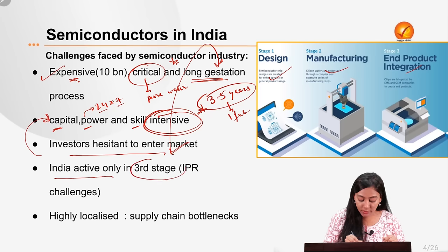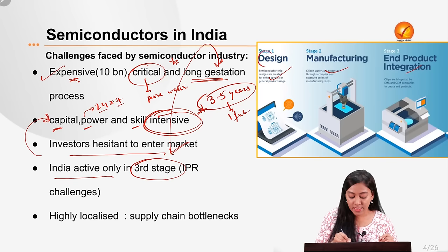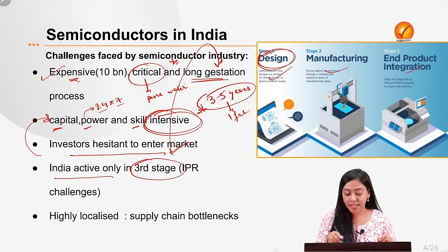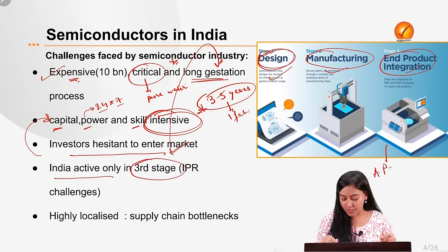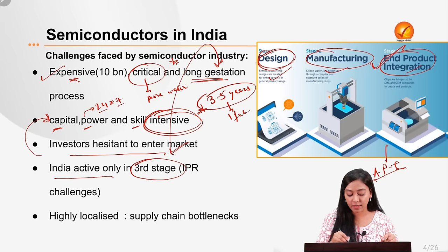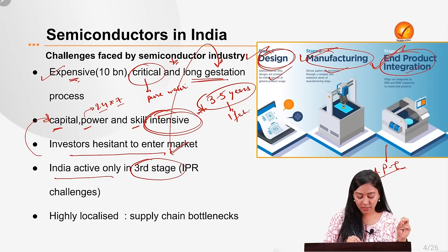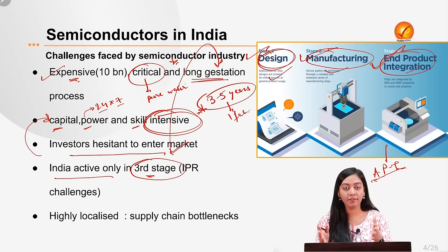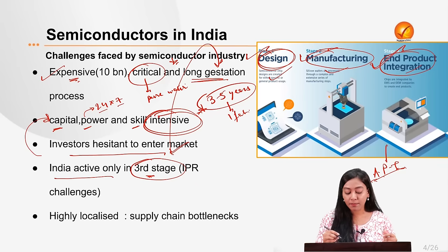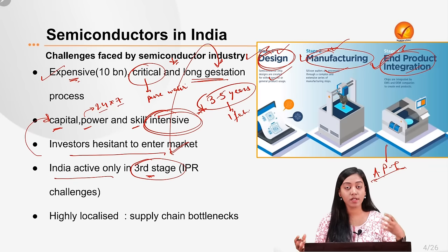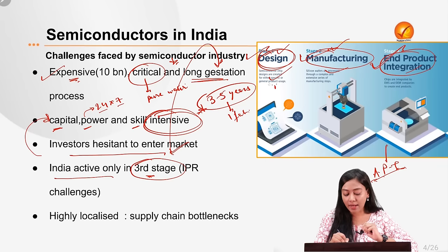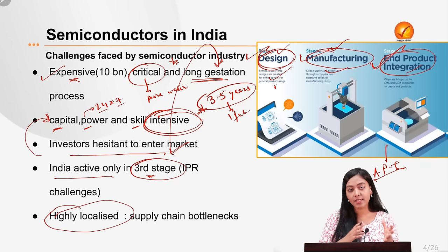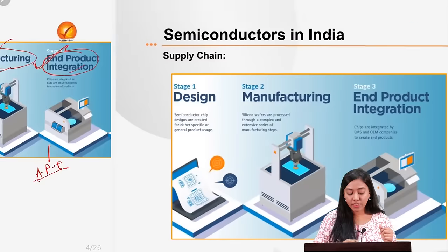The three stages of semiconductor supply chain are: first, designing the integrated chip; second, manufacturing using etching processes; and third, end product integration involving assembly, packaging, and testing. India is very good in the third stage but underdeveloped in the first and second stages. Entry into the first two stages is impeded because they are dominated by the USA, East Asian countries, and the EU, making it difficult for India to acquire IPR rights for unique designs. This also creates supply chain bottlenecks.